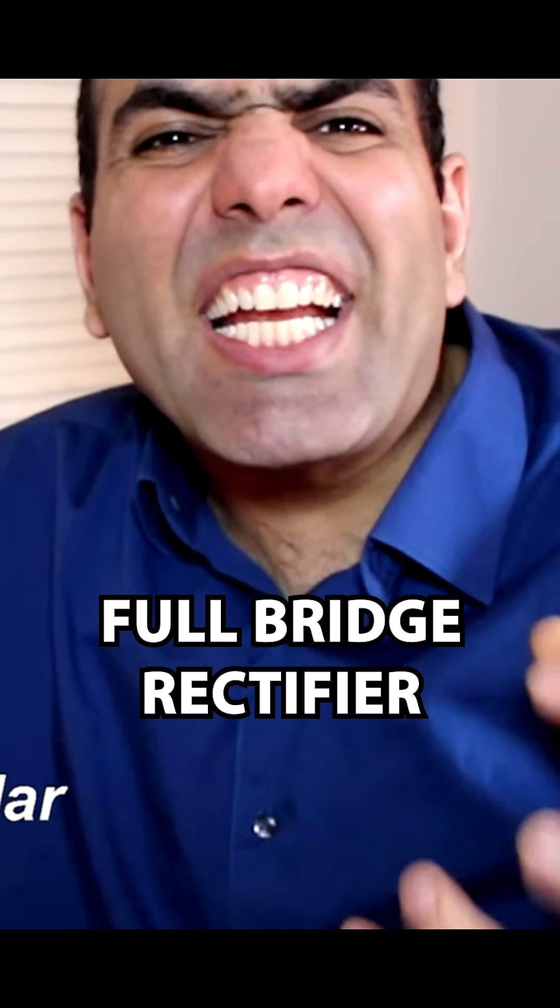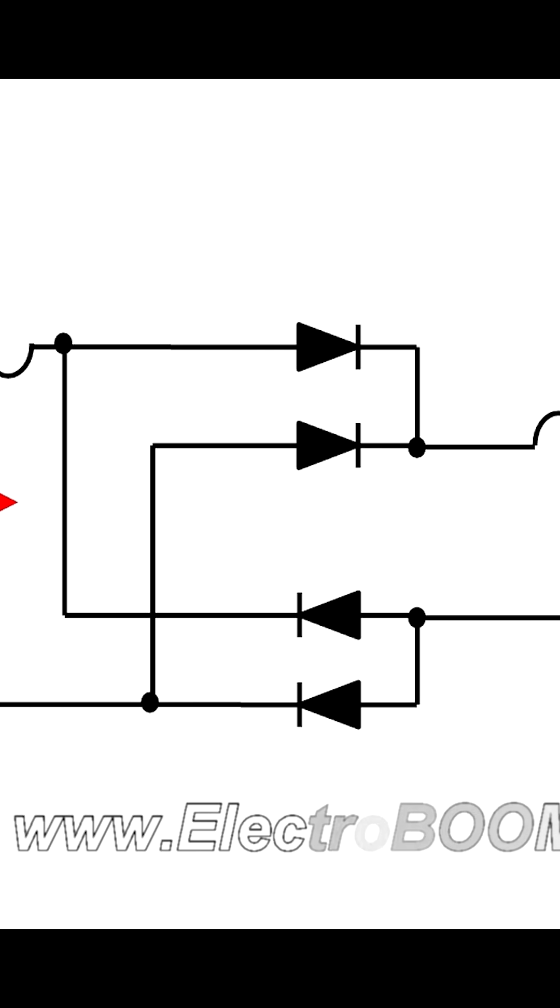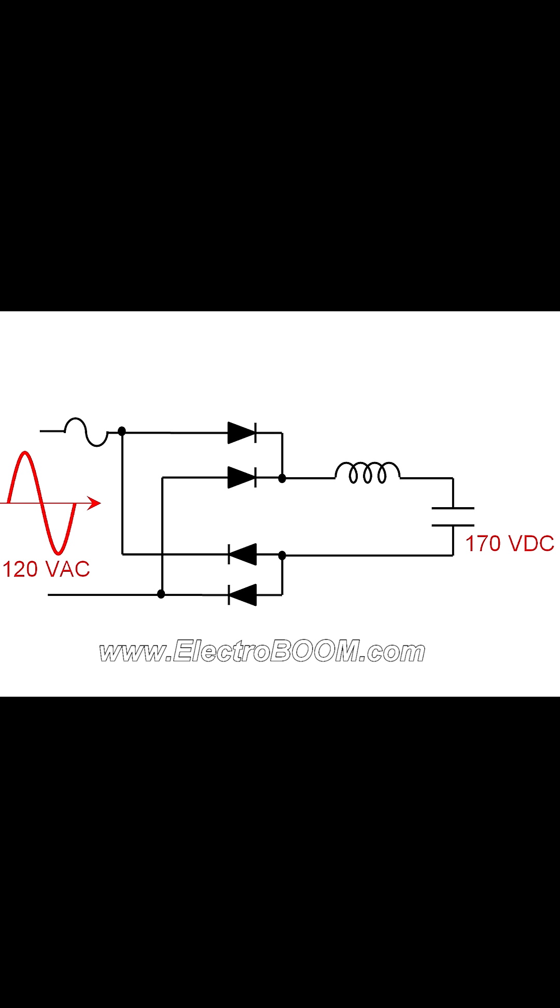I want to make a full bridge rectifier. When connected to 120 volt AC line, it is designed to output close to 170 volt DC at no load.